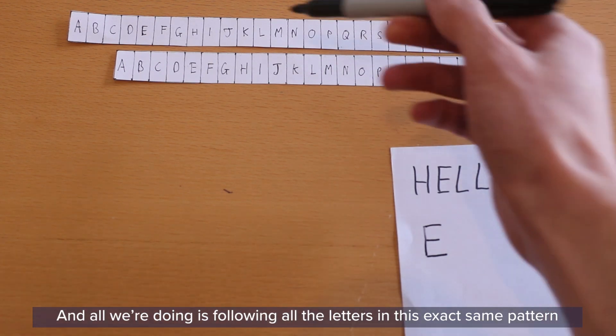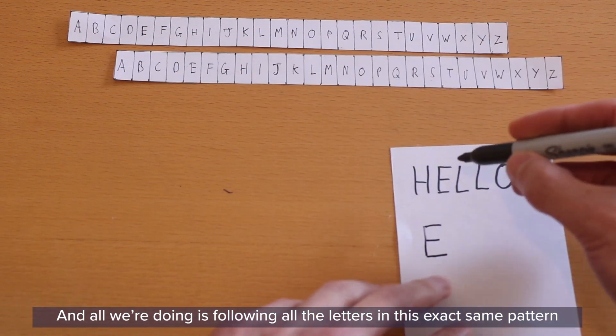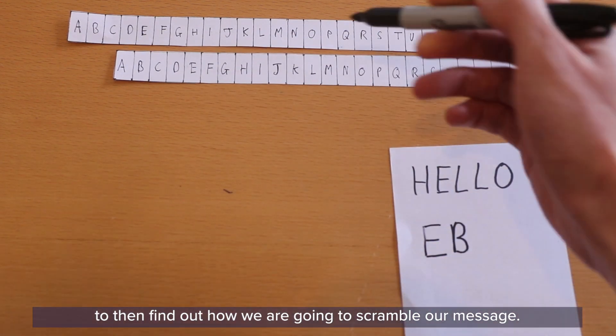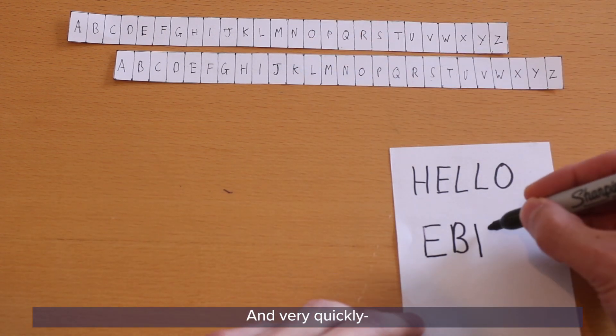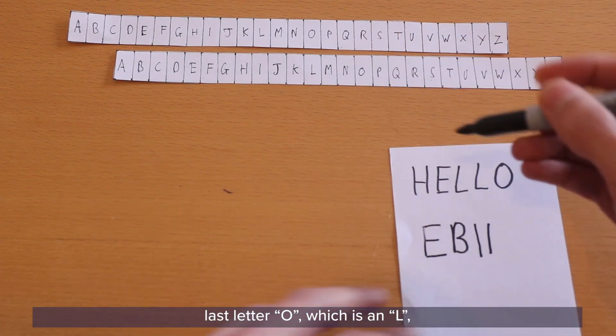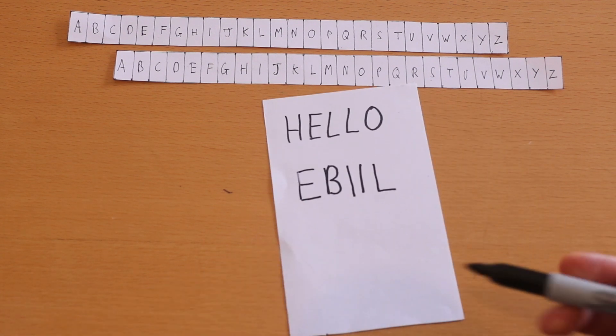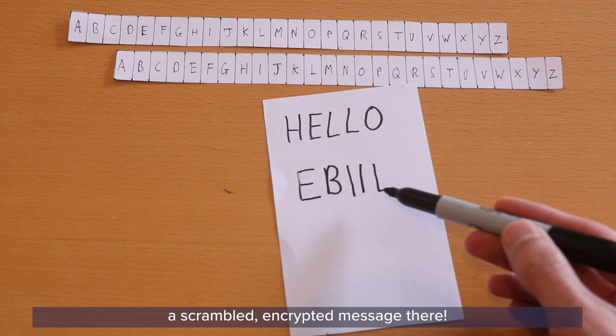And all we're doing is we're just following all the letters in this exact same pattern to then find out how we are going to scramble our message. And very quickly, the last letter O, which is an L, we have now created a scrambled, encrypted message there.